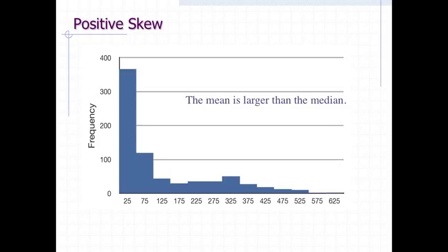Distributions with positive skew have larger means than medians. The mean and median of the baseball salaries shown in this figure are $1,183,417 and $500,000 respectively. Each unit on the x-axis represents $10,000. For this highly skewed distribution, the mean is more than twice as high as the median.